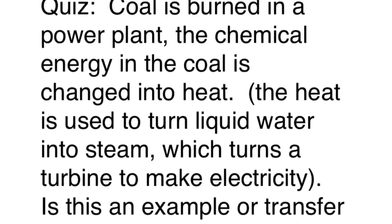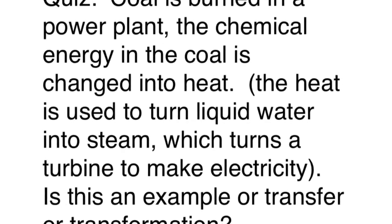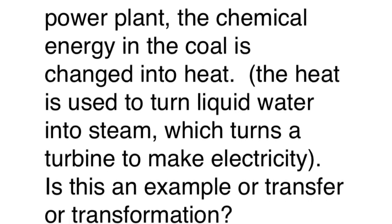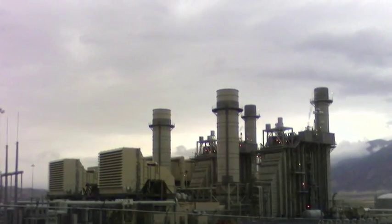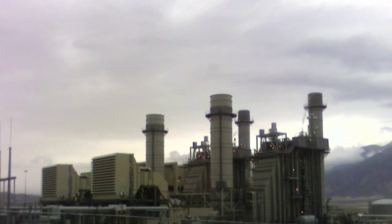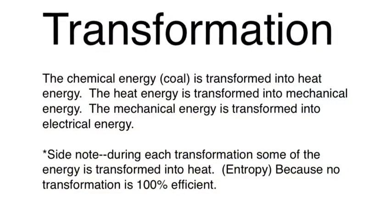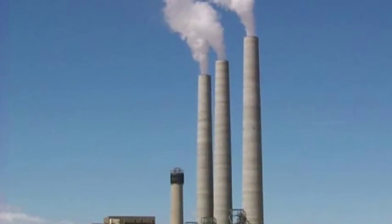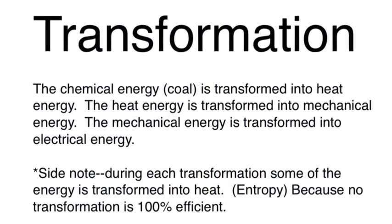Here's a little quiz. Coal is burned in a power plant, and the chemical energy in the coal is changed into heat. That heat is used to turn liquid water into steam, which turns a turbine to make electricity. So I'm describing either several transfers or several transformations — which one? The answer is transformations. The chemical energy in coal is transformed into heat energy, the heat energy is transformed into mechanical energy, mechanical energy into electrical energy, and so on.